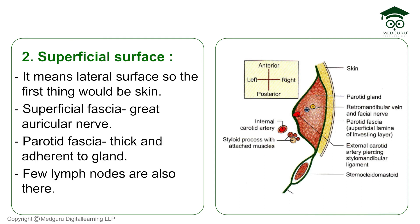The superficial surface is the lateral surface. From superficial to deep, it is related to: the skin, the superficial fascia containing the great auricular nerve — which is clinically very important — the parotid fascia which is thick and adherent to the gland, and a few lymph nodes.